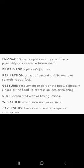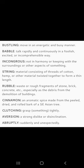Stripped means marked with or having stripes. Wreathed means to cover, surround or encircle. Cavernous means like a cavern in size, shape or atmosphere. Bustling means to move in an energetic and busy manner. Babble means to talk rapidly and continuously in a foolish, excited or incomprehensible way. Incongruous means not in harmony or keeping with the surroundings or other aspects of something.